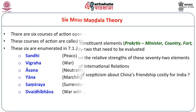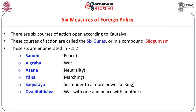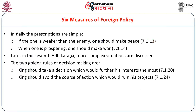After all the analysis, finally we need to take action. There are six actions identified, called the six measures of foreign policy. A king can have peace (sandhi), go to war (vigraha), remain neutral — called asana (sitting), march — that is mobilize troops while not yet at war, threatening (yana), surrender to a more powerful king (samshraya), or have war with one and peace with another simultaneously (Dvaidi Bhava). The non-aligned movement is basically asana — not aligned with either the USA or USSR. These six are also called Shadgunya.